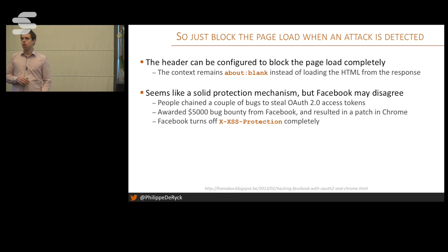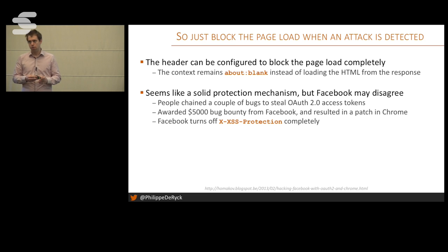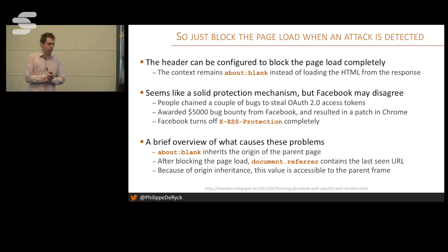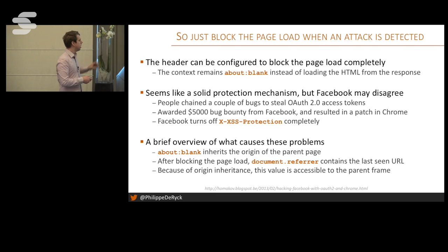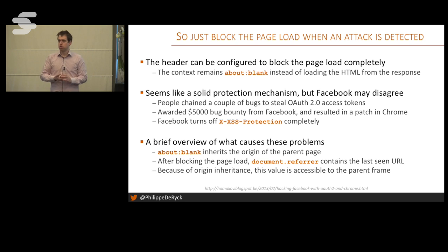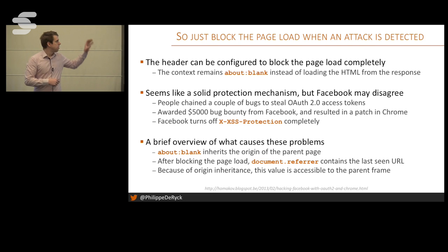In response, Facebook turned X-XSS-Protection off by setting it to zero. The reason: first, they have a very solid defense mechanism against cross-site scripting in place and are confident they don't have reflected XSS because of how they build their pages. They decided it's better to turn it off than to risk flaky bugs causing a compromise. What actually happened in the attack: because of the blocking, the page got an 'about:blank' origin URL. About:blank inherits the origin of the parent page, meaning the parent page can inspect the blocked frame. The frame contained a document referrer property — the last seen URL — and in this case they were in the middle of an OAuth flow.